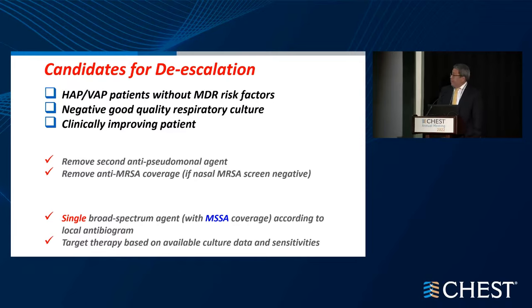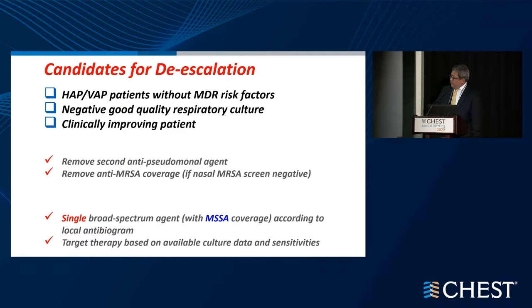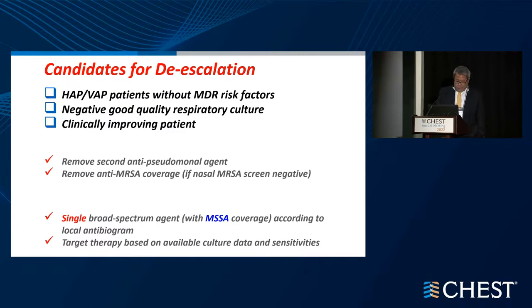With all these empirically started antibiotics, it's important to consider timing for de-escalation. For patients without MDR risk factors, if you're confident about a negative good-quality respiratory culture and the patient is clinically improving, consider removing the second anti-pseudomonal coverage, removing MRSA coverage if nasal screens are negative, and ultimately converging to a single broad-spectrum antibiotic with MSSA coverage based on the antibiogram. It is important to target therapy based on available culture data and sensitivities.